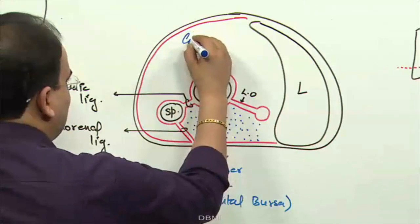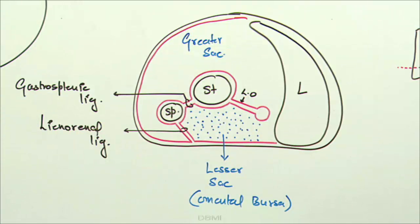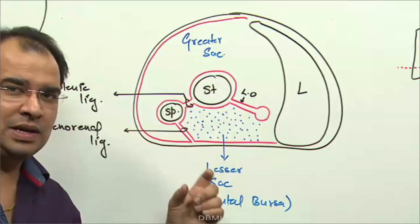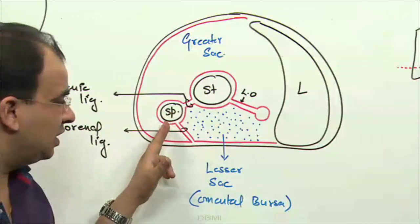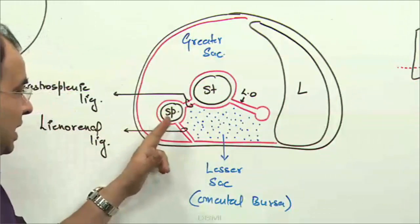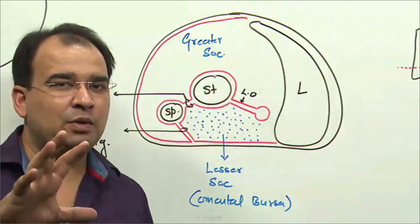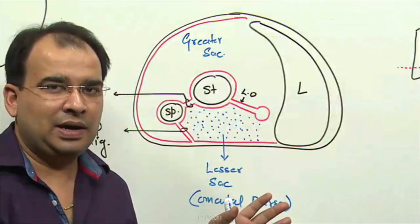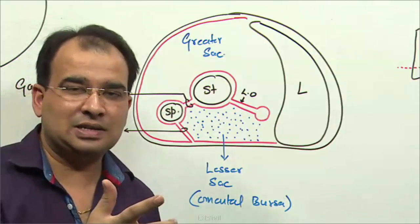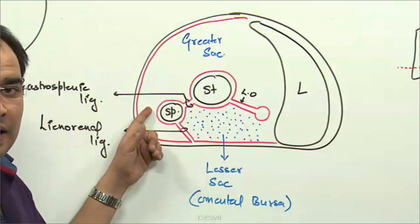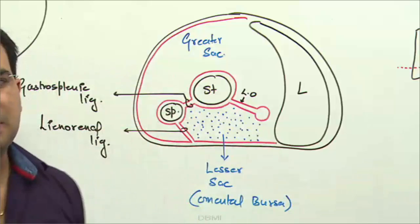Everything else — all the unshaded area — is the greater sac. Note where the spleen is projecting: because the spleen developed from the left layer of the dorsal mesogastrium, it projects into the greater sac. In gross anatomy you might think the spleen is behind the stomach, and what's behind the stomach is the lesser sac — but the spleen is actually not in the lesser sac; it projects into the greater sac.